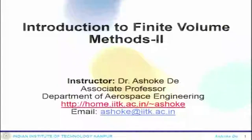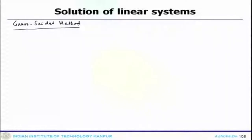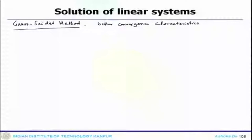Welcome back. Now, the second method we can talk about is the Gauss-Seidel method. This is another popular method which can be slightly better than Jacobi because it has better convergence characteristics over Jacobi.